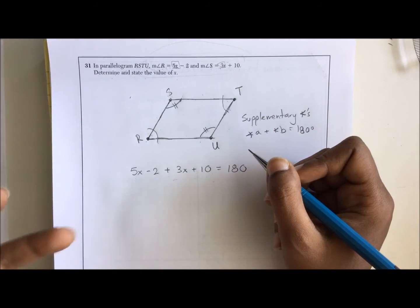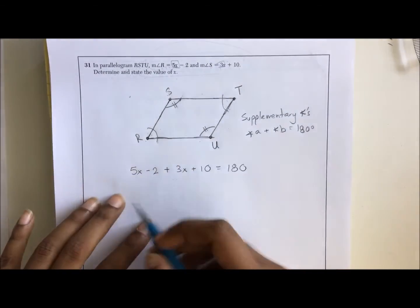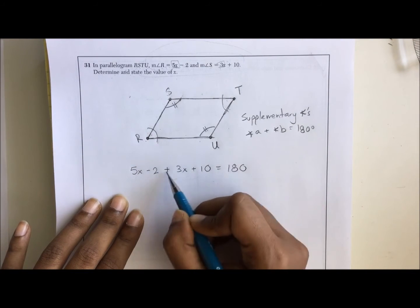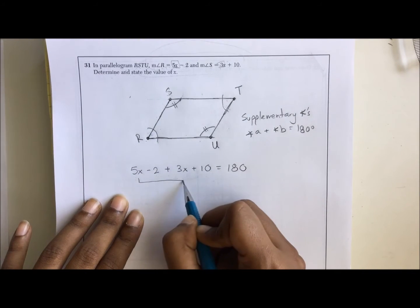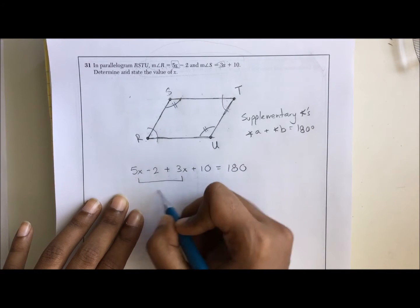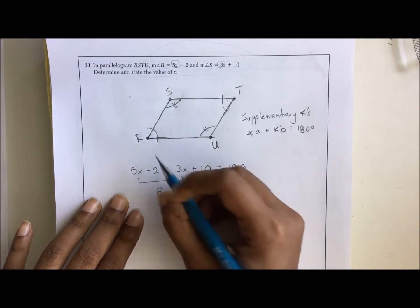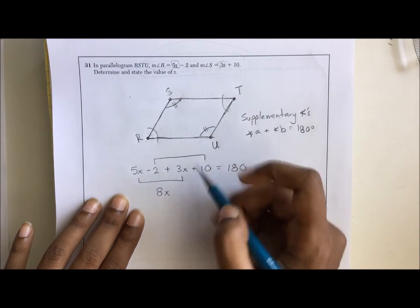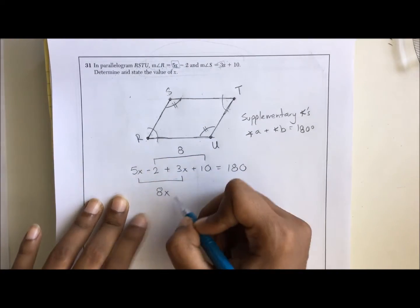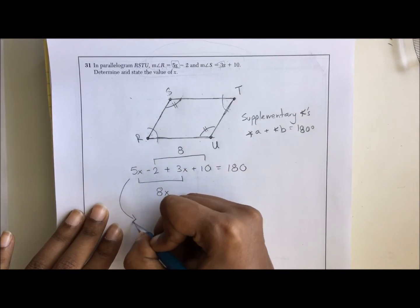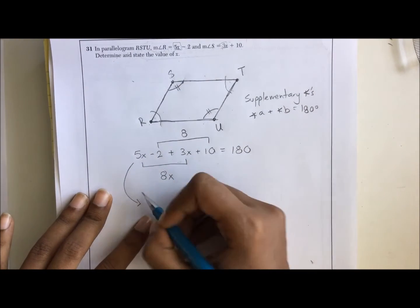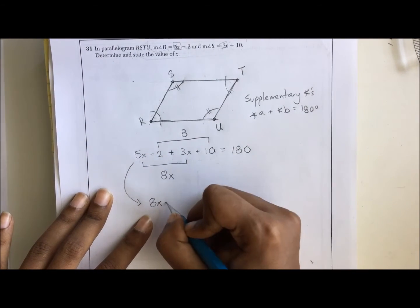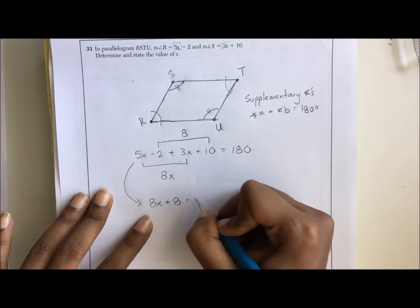All right, a nice linear equation. We just need to combine like terms and solve for x. First thing, 5x and 3x. 5x plus 3x is going to give us 8x. Negative 2 plus 10 is going to give us 8. So if we rewrite all of that, that's going to be 8x plus 8 equals 180.